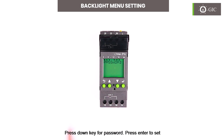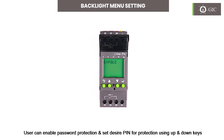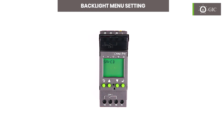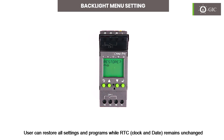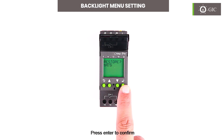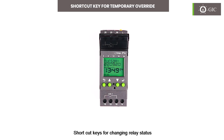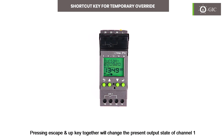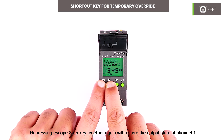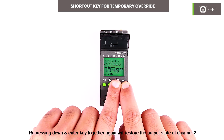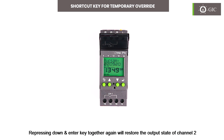Press the down key for 'Password' and press enter to set. The factory default is disabled. The user can enable password protection and set a desired PIN using the up and down keys, then press enter to confirm. Press the down key for 'Factory Restore' and press enter to confirm. The user can restore all settings and programs while the RTC clock and date remains unchanged. Press the down key for 'Device Info' — users can retrieve critical information about the device. Shortcut keys: pressing ESC and UP together changes the output state of channel 1; pressing again restores it. Pressing DOWN and ENTER together changes the output state of channel 2; pressing again restores it.